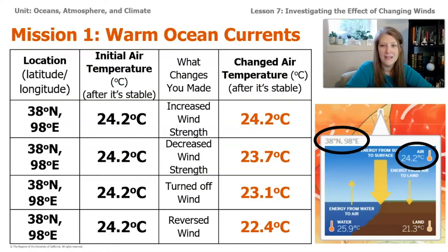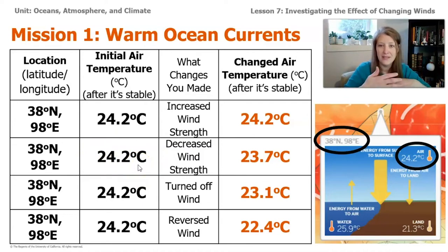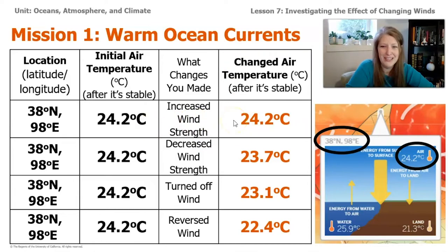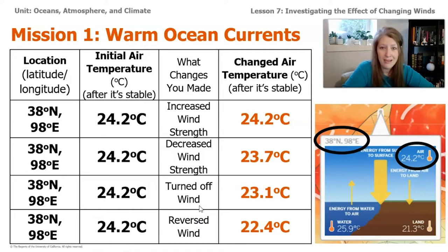Let's take a look at my data table. The location was the same every time, and the initial air temperature was the same since I took it at the beginning. When I increased the wind speed, I didn't really see any change at all. When I decreased the wind strength, I actually saw the air temperature go down just a little bit. When I turned the wind off completely, I saw the temperature go down even a little bit more. But when I reversed the wind, the air temperature changed by almost two degrees Celsius — that's a huge change in the overall air temperature of a location.